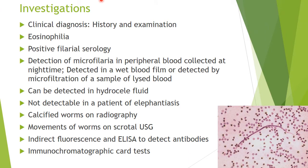Filariasis is usually a clinical diagnosis; no specific investigation is strictly needed. It can be diagnosed by history and examination. Findings include eosinophilia, positive filarial serology, and microfilariae detected in peripheral blood collected at night, either on a wet blood film or by microfiltration. In chronic elephantiasis, worms are already dead and cannot be detected. Calcified worms can be seen on radiography or CT scan.